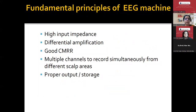The fundamental principles of the EEG machine: it is a high input impedance machine. These are the important qualities. Whenever somebody buys a machine, we should look at these parameters. There should be differential amplification. The machine should have a good CMRR. There are multiple channels to record simultaneously from different scalp areas, and there should be proper storage and output data.